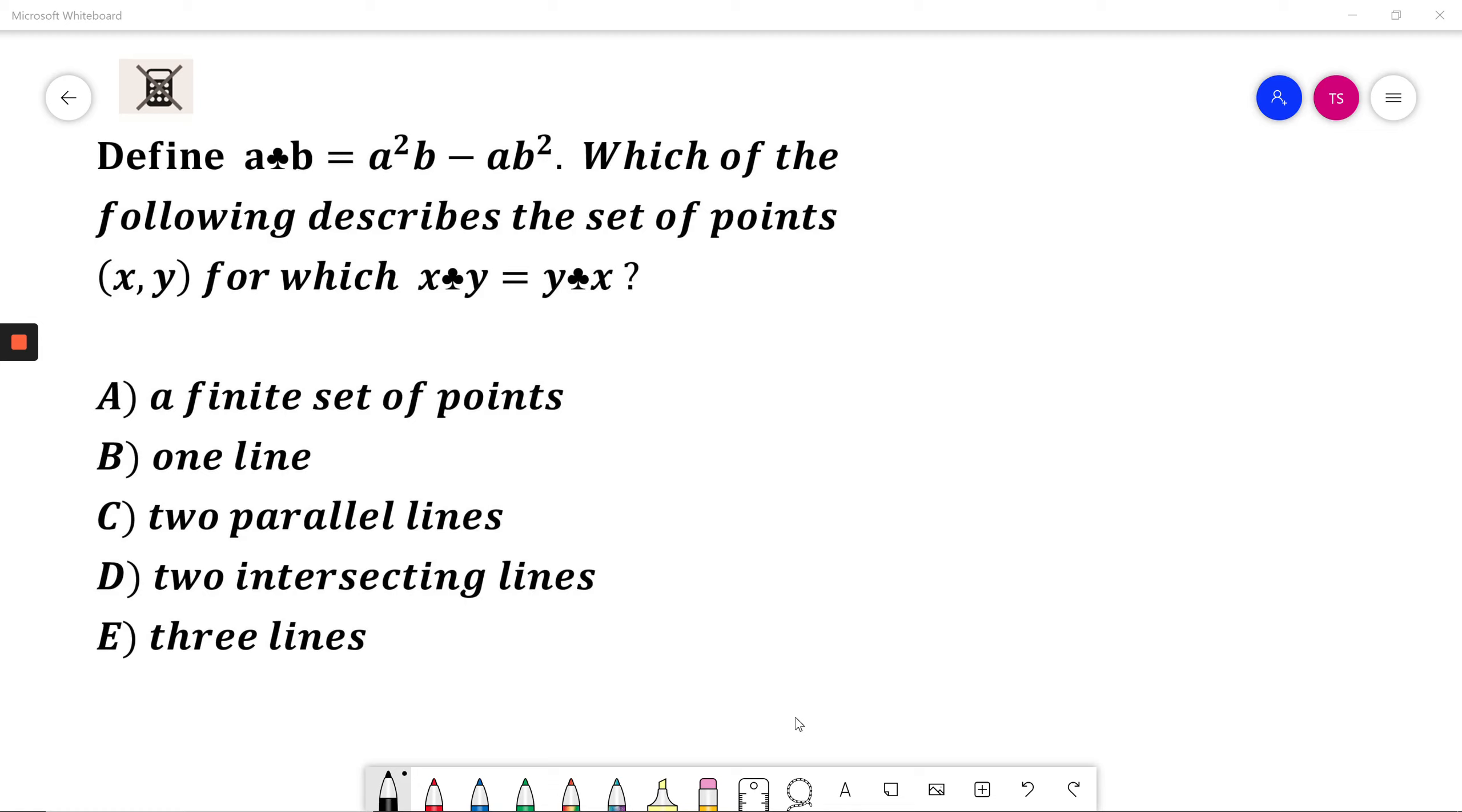Define a♣b = a²b - ab². Which of the following describes the set of points (x, y) for which x♣y = y♣x?